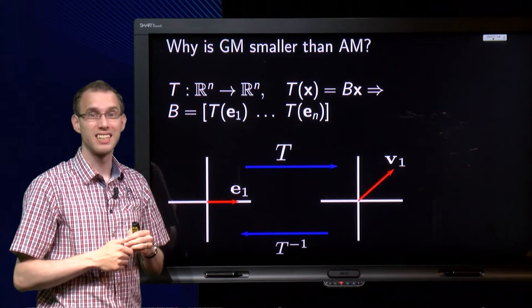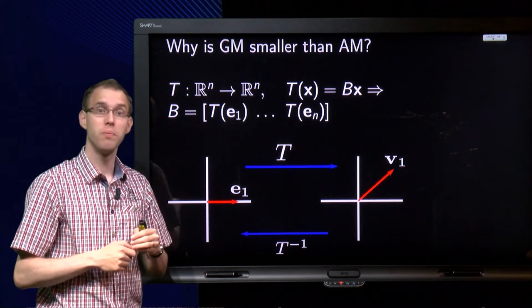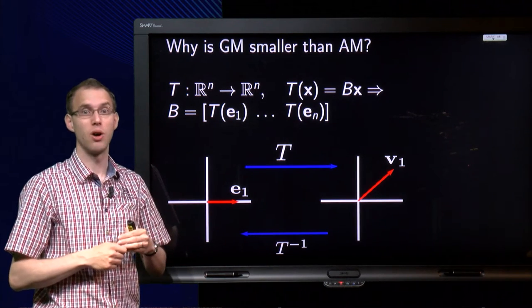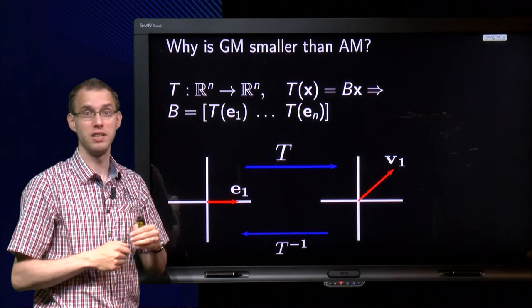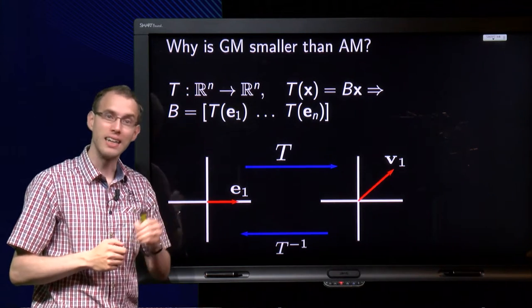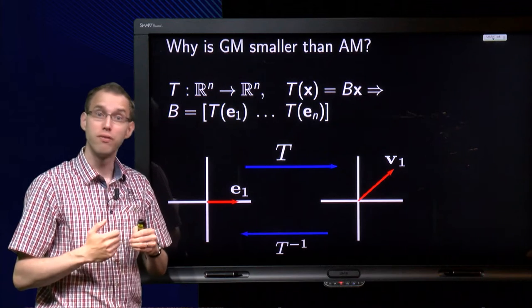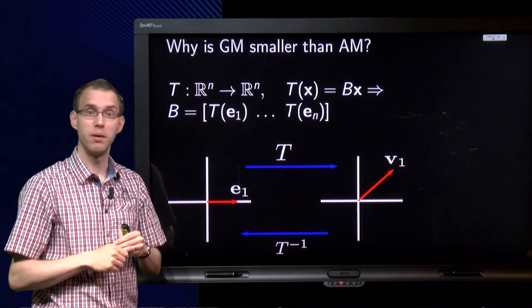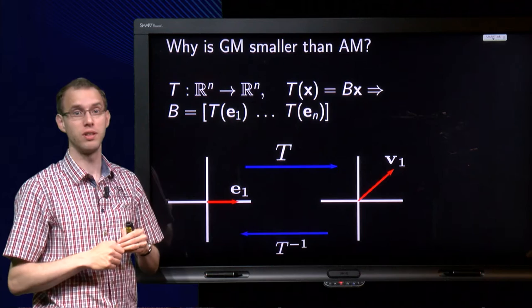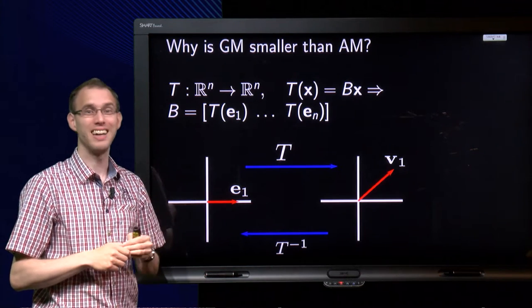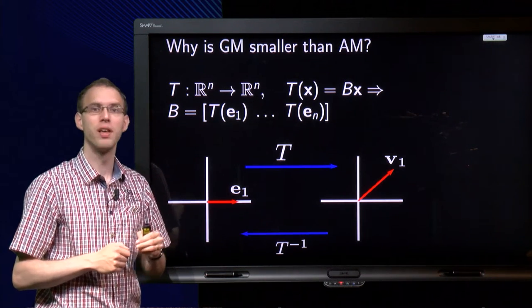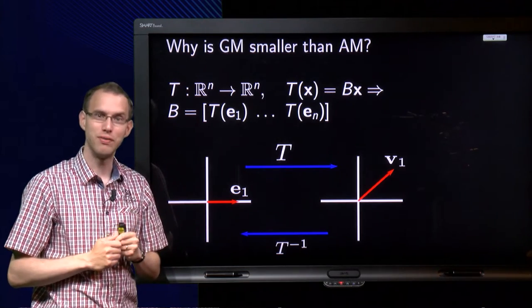However, this cannot be the case. It will show that the algebraic multiplicity is always equal to the geometric multiplicity or bigger. And that is nice since it gives us a fast criterion to see whether a matrix is diagonalizable or not. But why is the geometric multiplicity always smaller? You will learn that in this video.